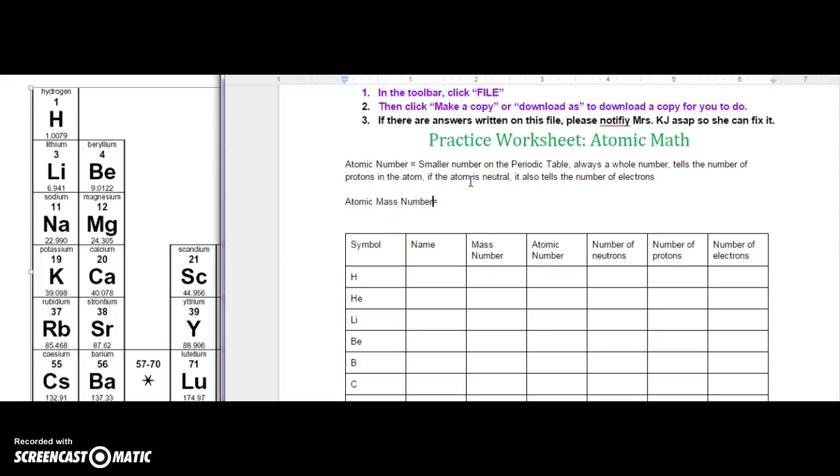What about the atomic mass or the atomic mass number? What is that? That is simply the mass of the atom, or you can think of it as how heavy it is in AMUs. What does AMU stand for again? Atomic Mass Units.